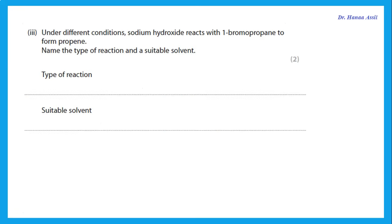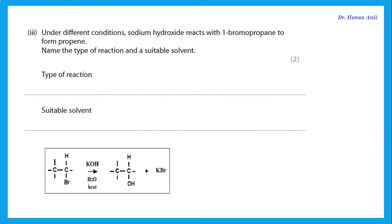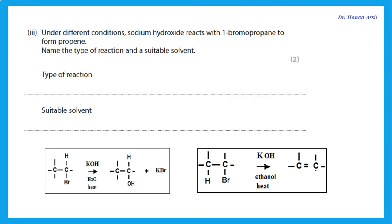Under different conditions, sodium hydroxide reacts with 1-bromopropane to form propene. There are two types of reactions of hydroxide with halogenoalkanes: with aqueous hydroxide, Br is replaced by OH (substitution); with hydroxide in ethanol as solvent, this is an elimination reaction in which H and Br are removed from the halogenoalkane to form an alkene. Here the solvent should be ethanol.